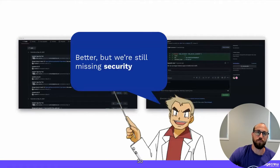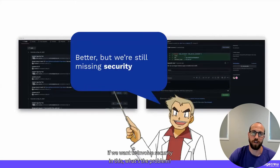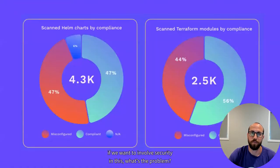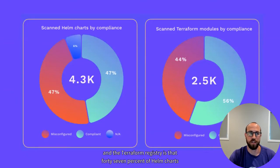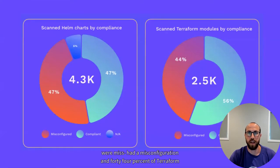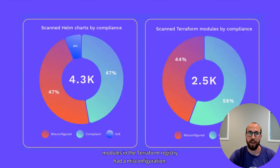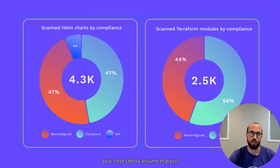If we want to involve security in this — what's the problem? Well, when we scanned Artifact Hub and the Terraform registry, we found that 47% of Helm charts had a misconfiguration and 44% of Terraform modules in the Terraform registry had a misconfiguration.